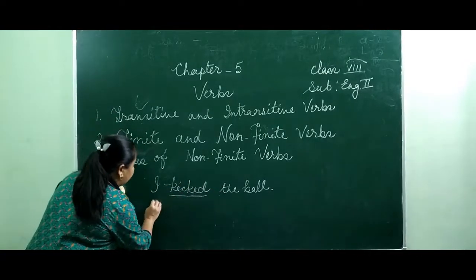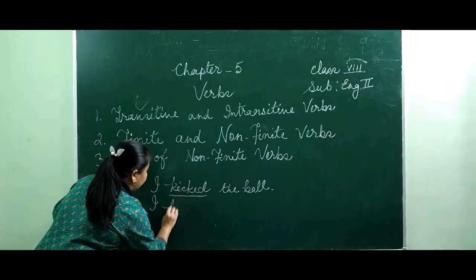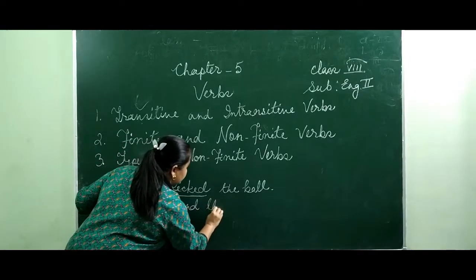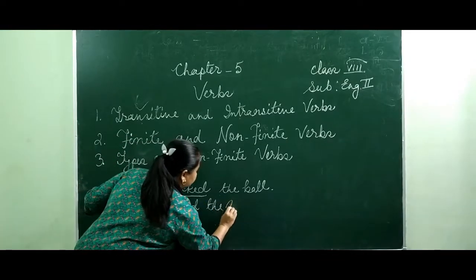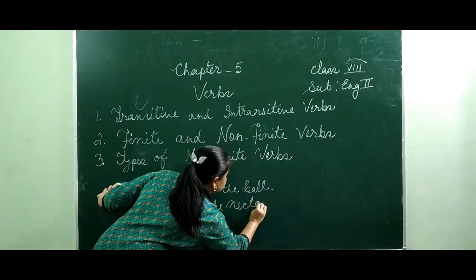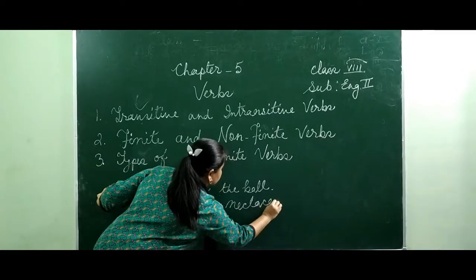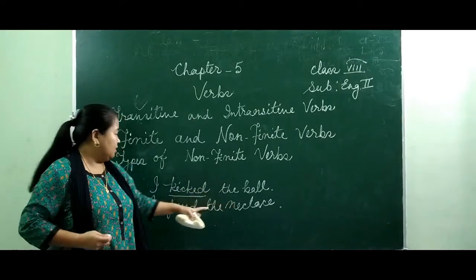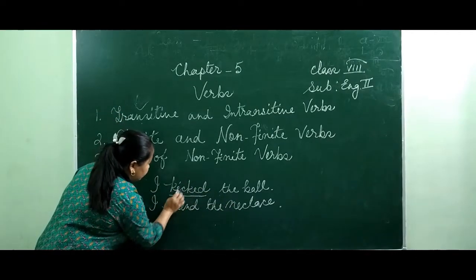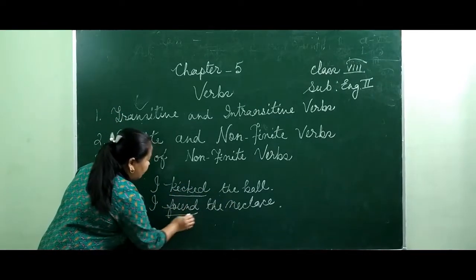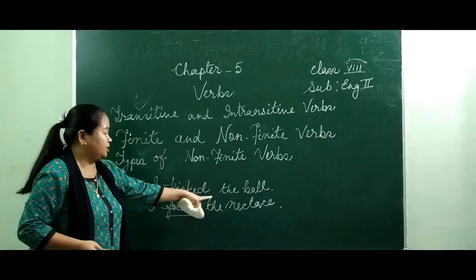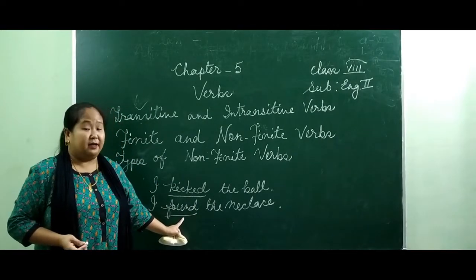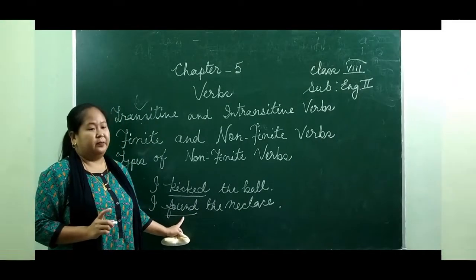Another example: 'I found the necklace.' I found what? The necklace. So this verb keeps an object to complete its meaning. This is called a transitive verb.